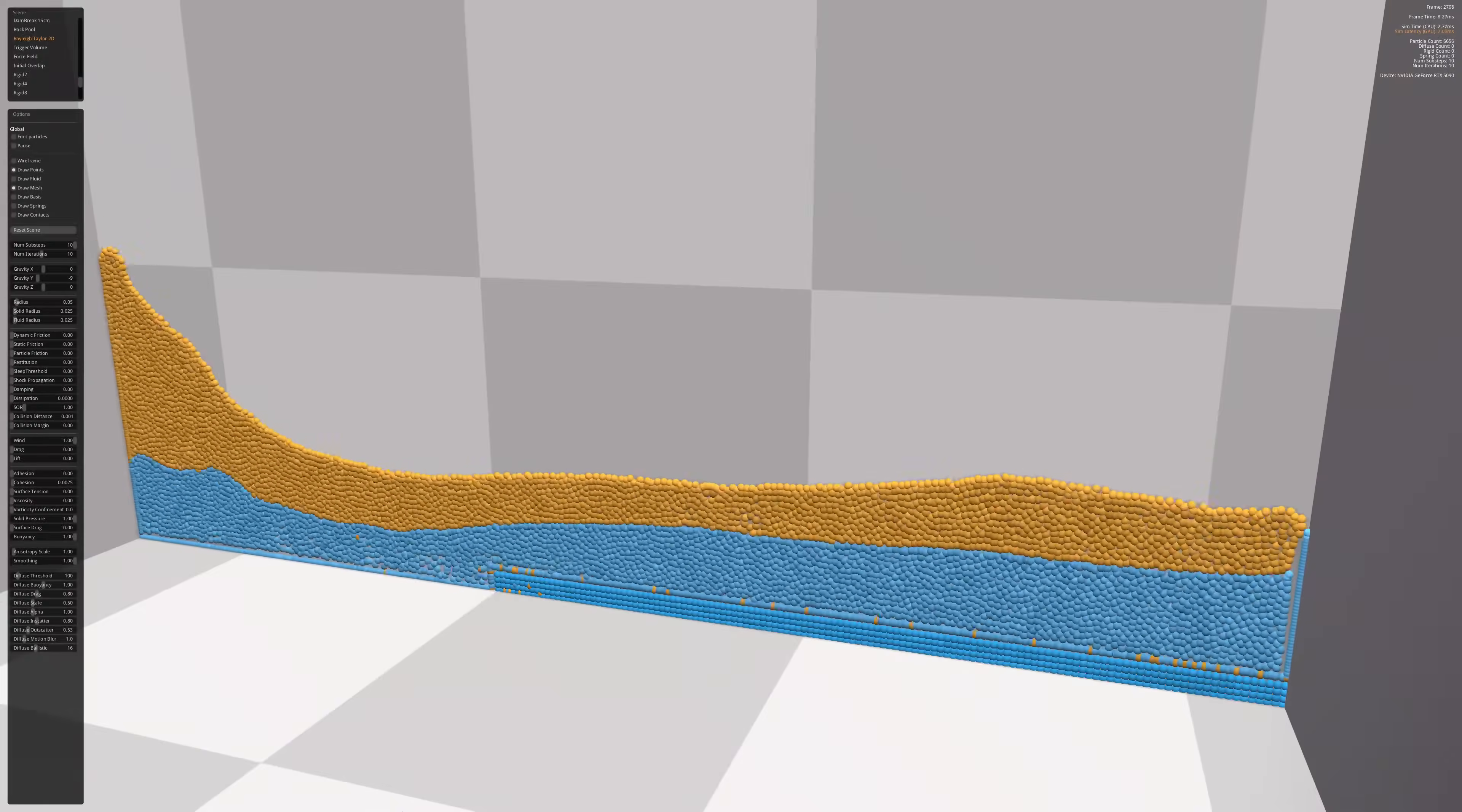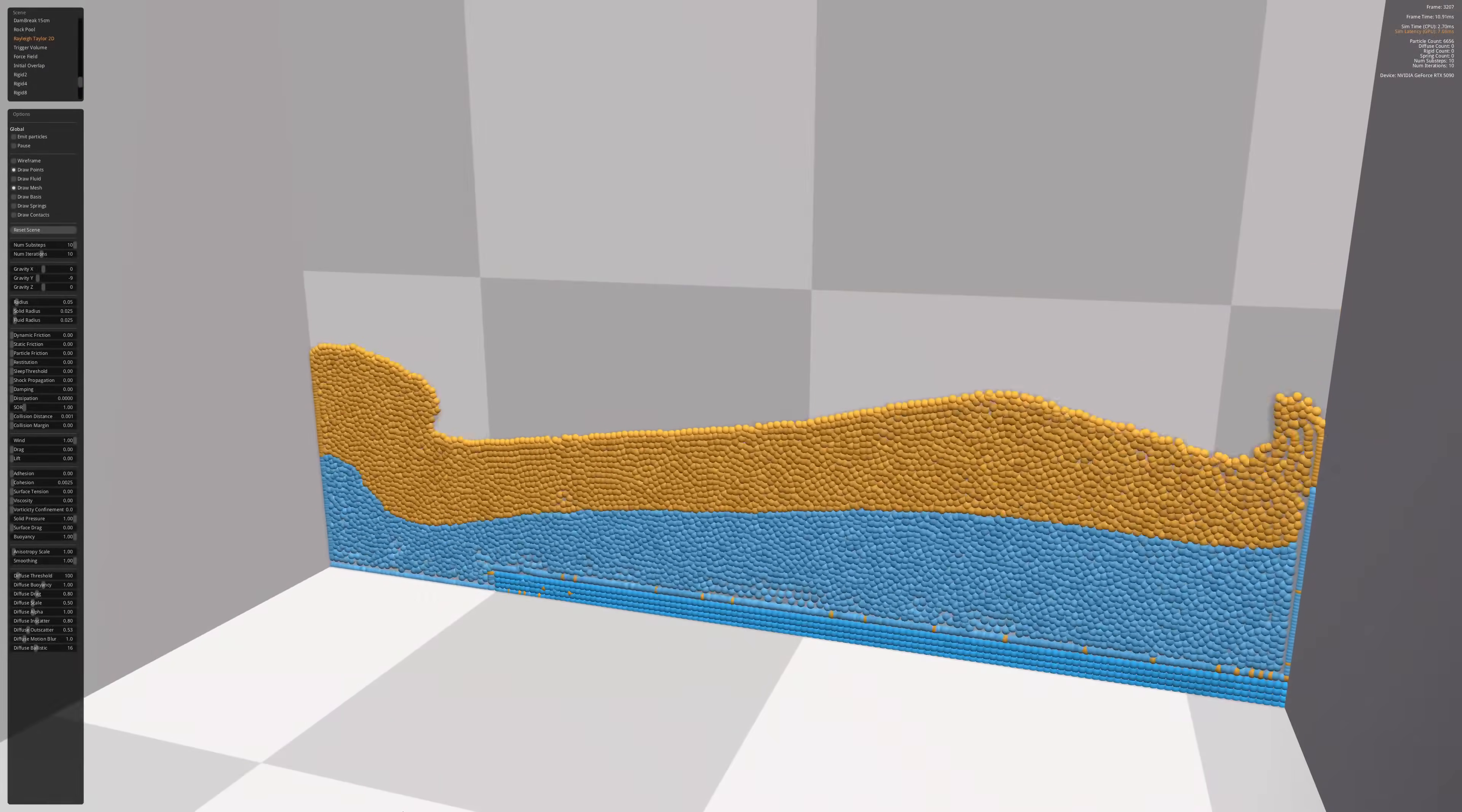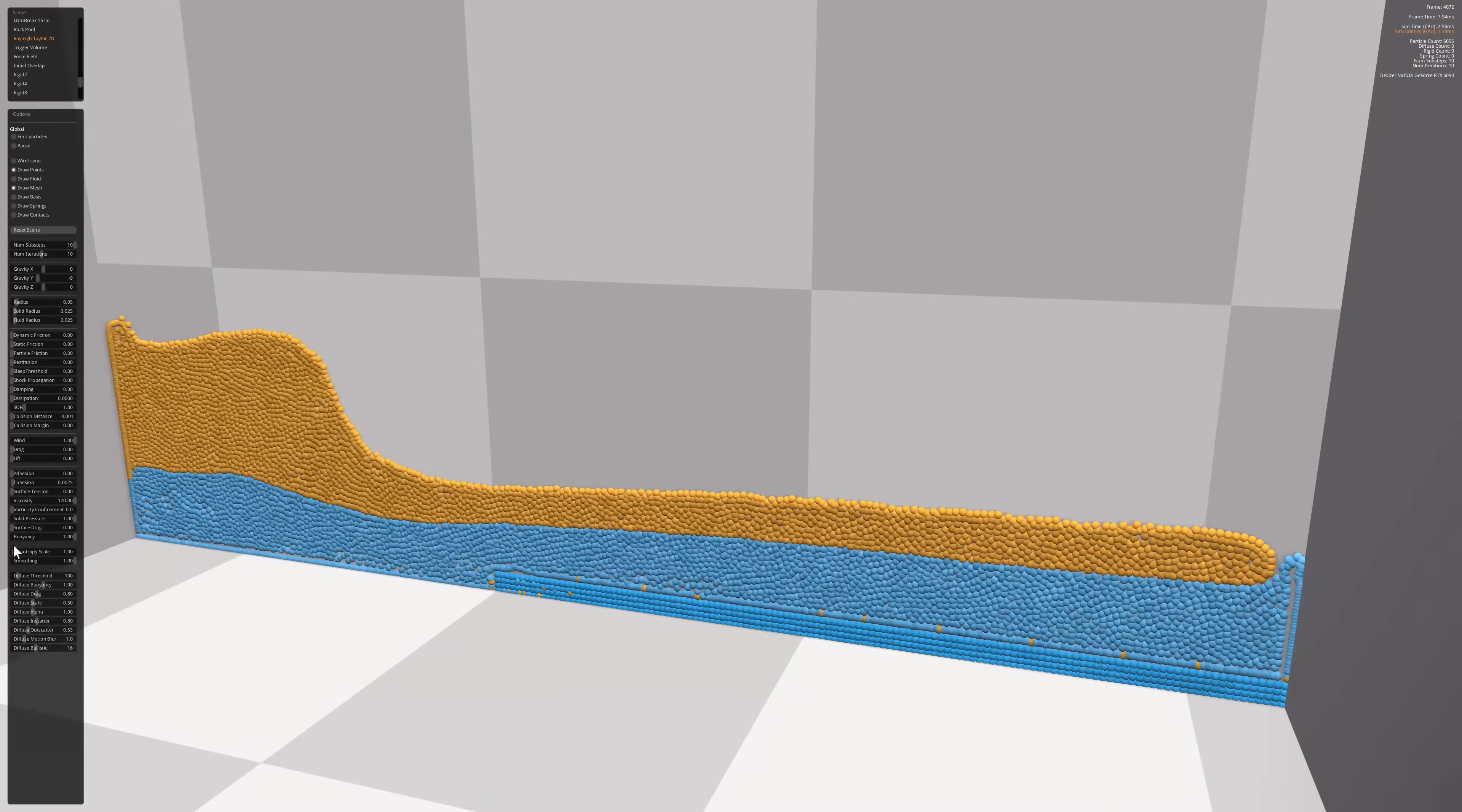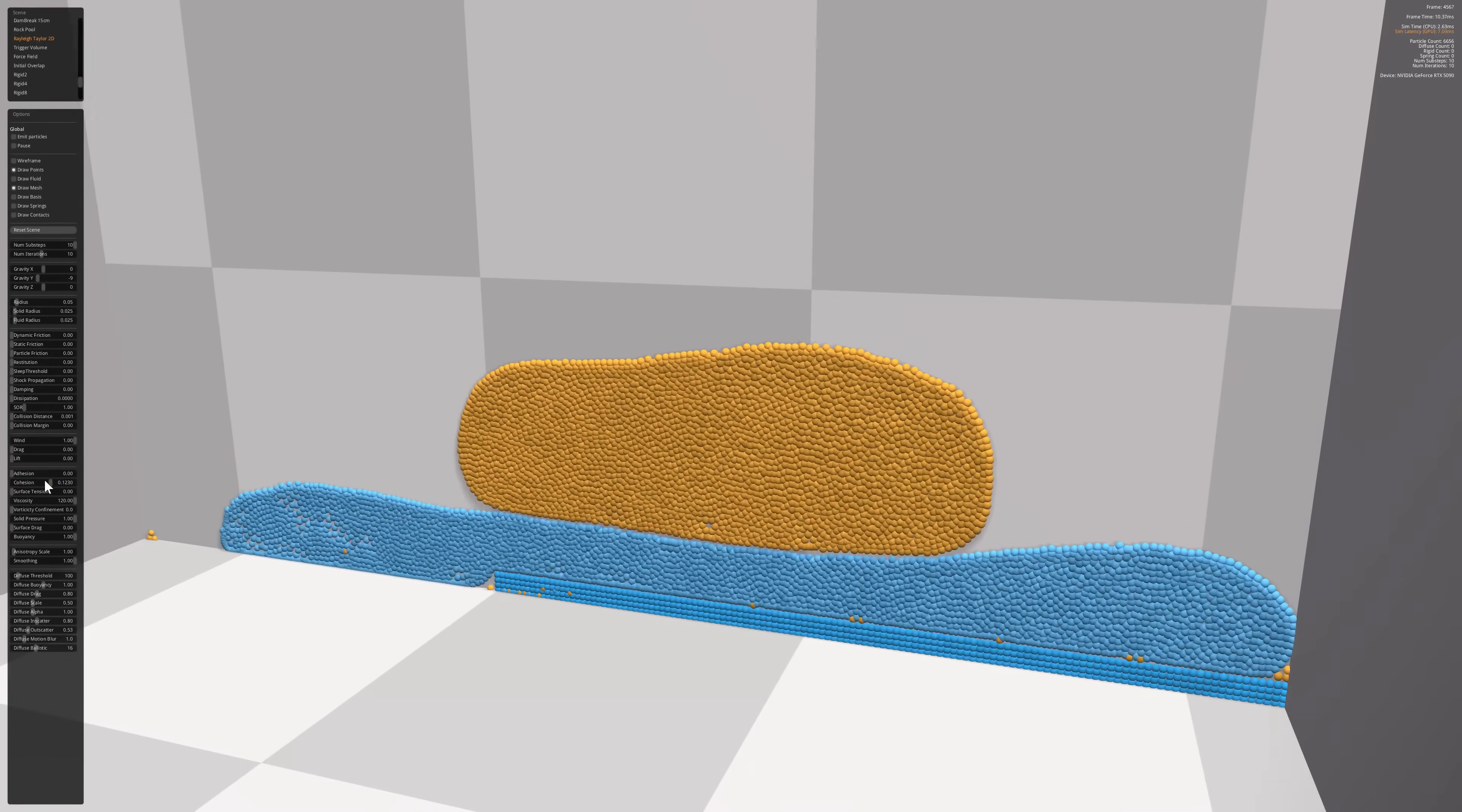And then if I adjust the viscosity and adhesion and flange of all this liquid, I can produce some really weird and oddly disgusting looking results, even though I can't put my finger on why exactly it is disgusting. But it is, isn't it? It's disgusting. Just don't stick your finger in that.